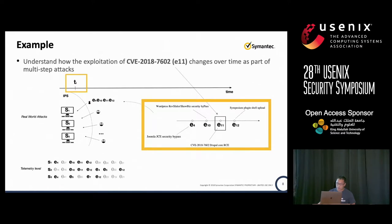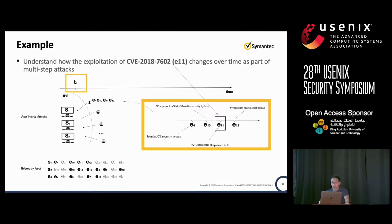Talking about the motivations, let's start with the example regarding CVE-2018-7602 — it's about the Drupal remote code execution. Suppose we have the ground truth and we can get the script or binary from the attackers. We can actually see a branch like this: you would observe that it's a recon phase, a scanning branch, attacking different content management systems and trying to exploit.